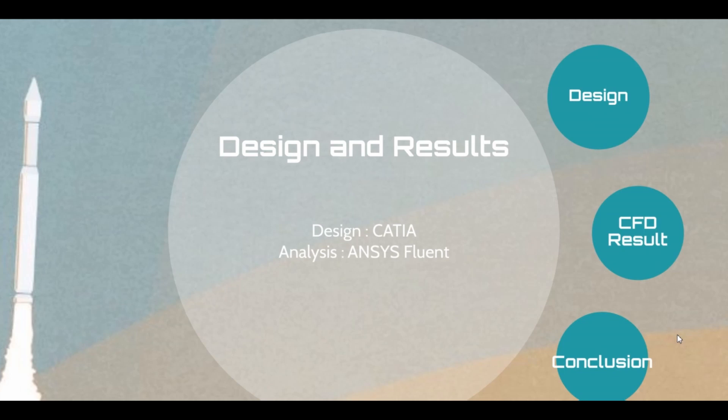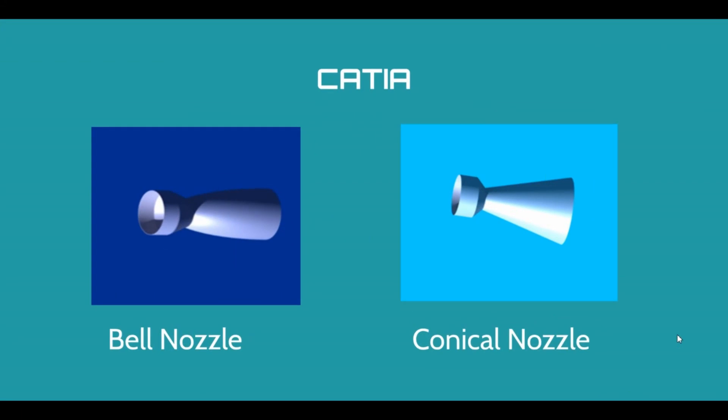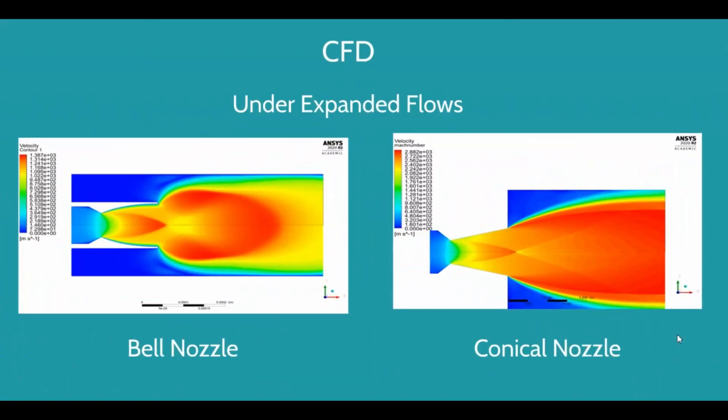After you get the coordinates, you can use any software to create the external contour of the bell nozzle. This is an example of the bell nozzle which we created using CATIA software, the 3D model. We made the 2D model to analyze that in CFD. These are the CFD results which we got using ANSYS Fluent.